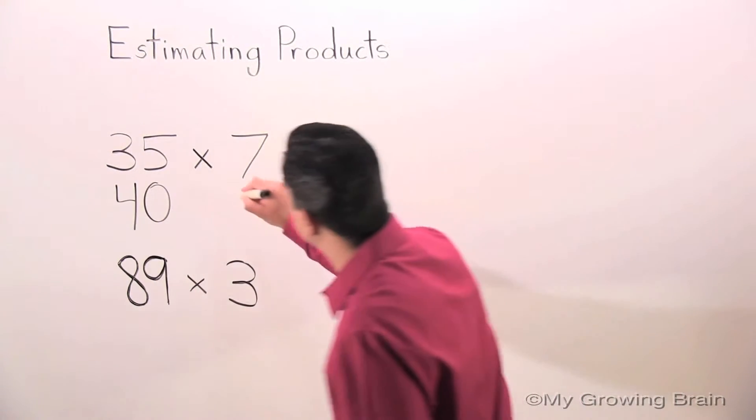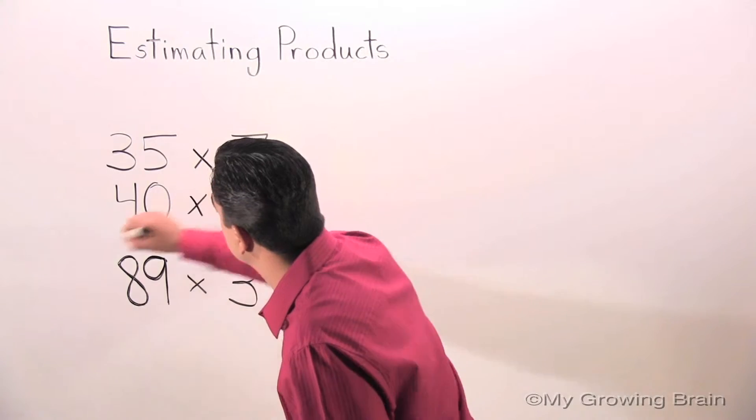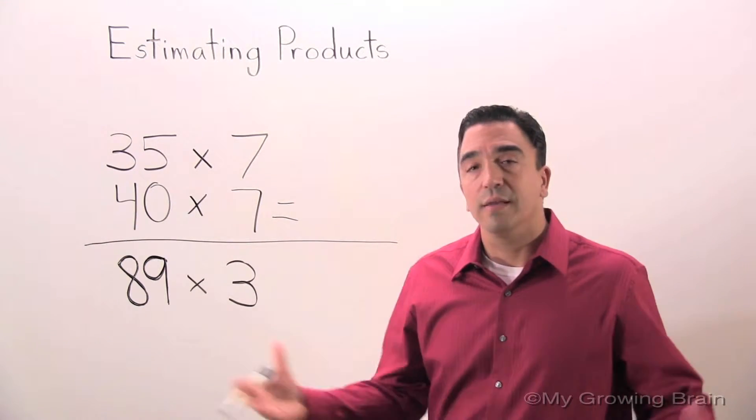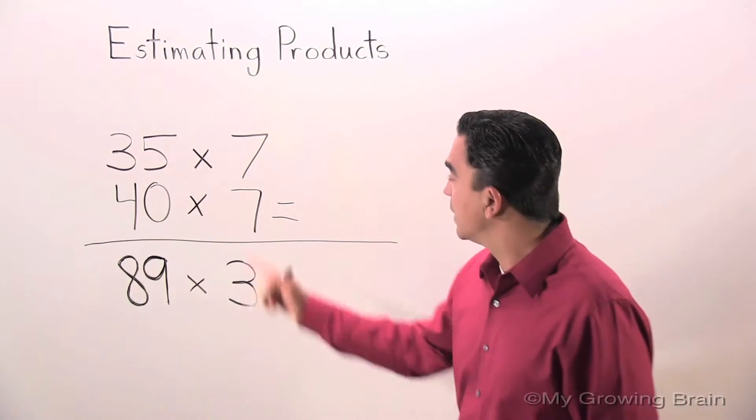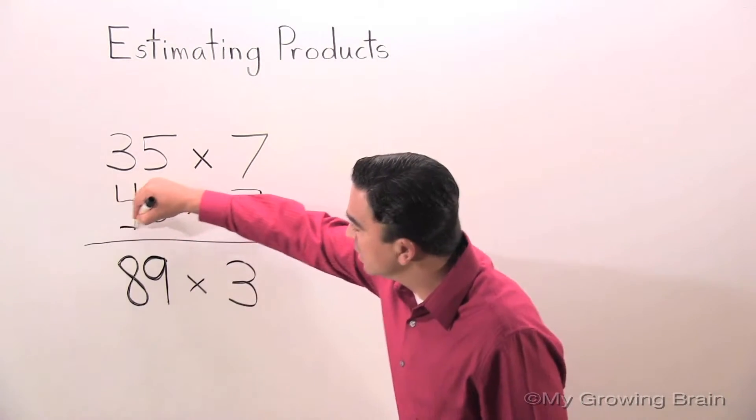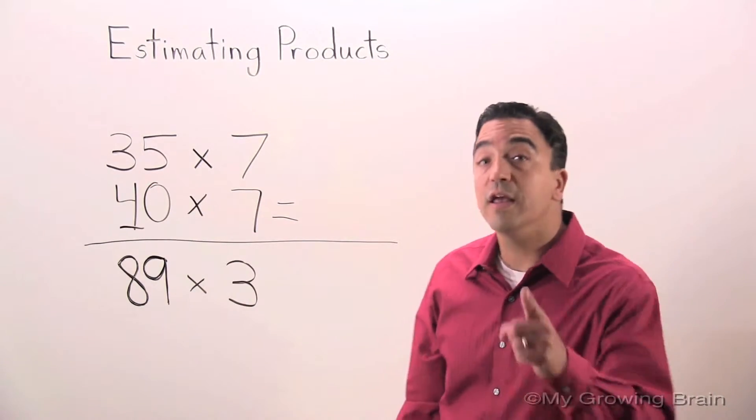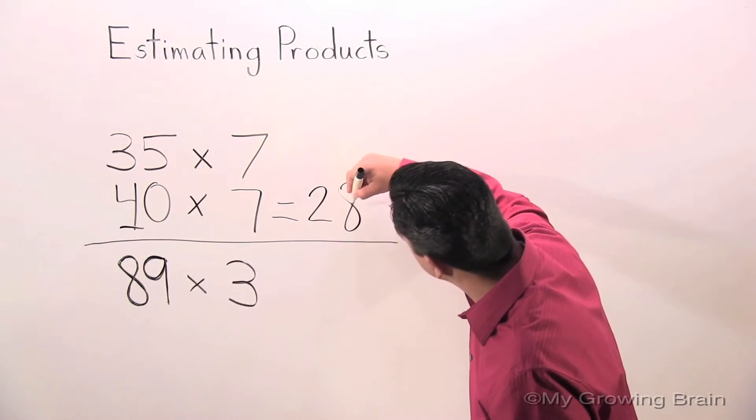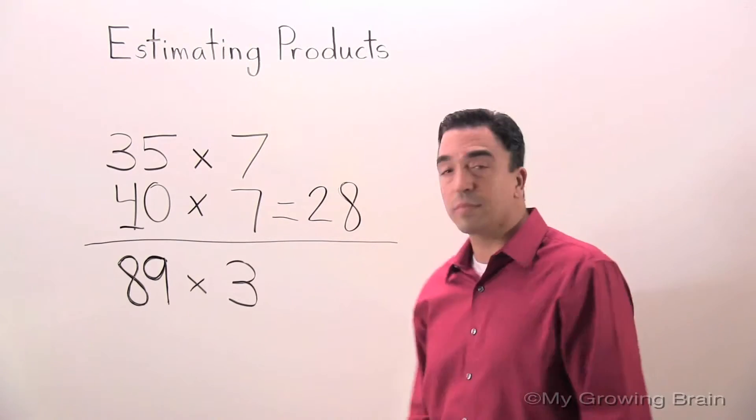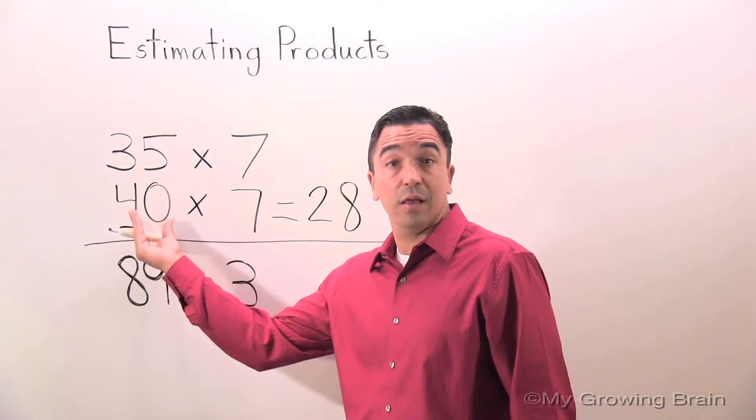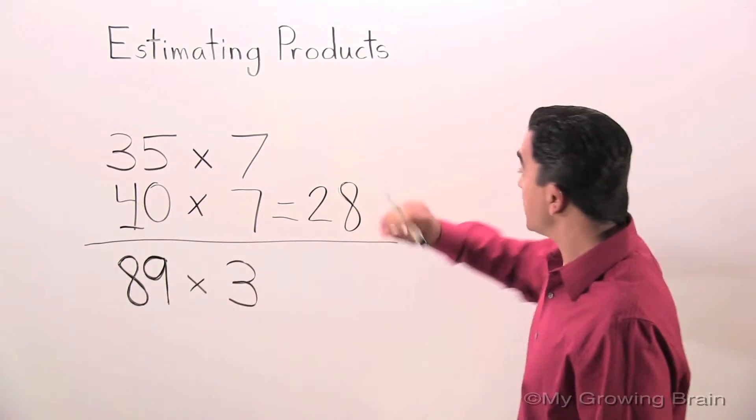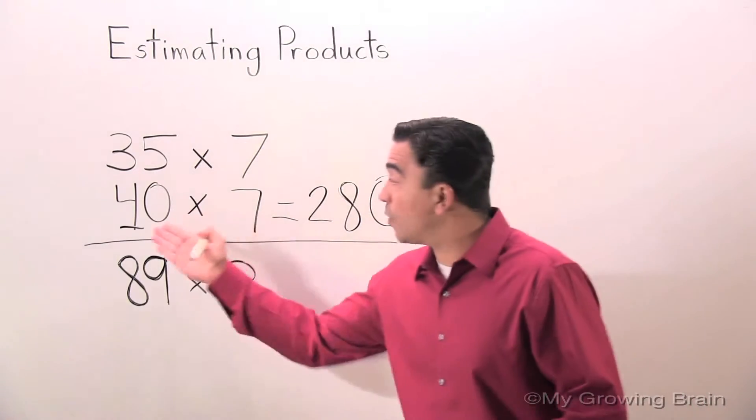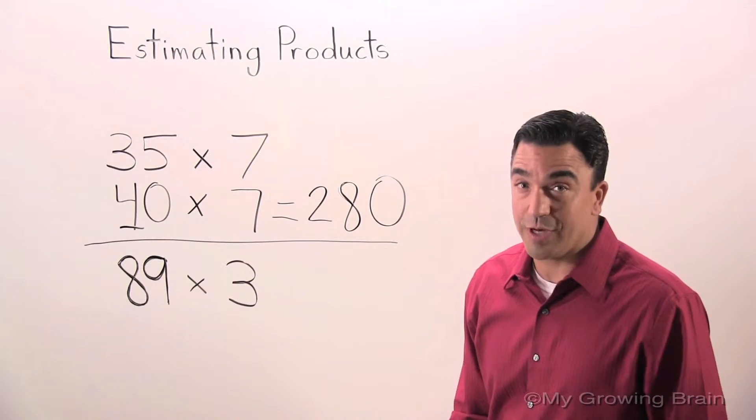Just bring down the 7. I'm going to use mental math. 7 times 4 is 28. Just going to take the 0, put it right there. 40 times 7 equals 280.